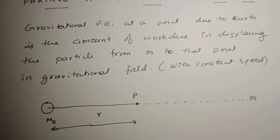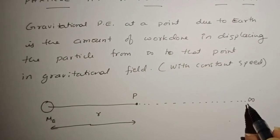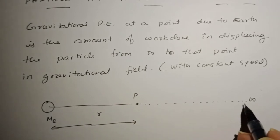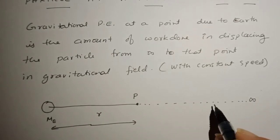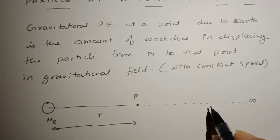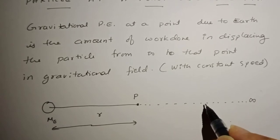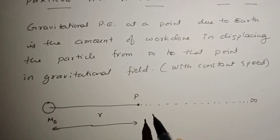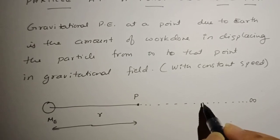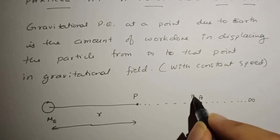As you can observe, if the particle is at infinity the gravitational force between that particle and the earth is zero. When you bring the particle closer and closer to the earth, the gravitational force increases — that means there is a variable force. Whenever there is a variable force, work done is the definite integral of force over displacement, so I should use integration. I will consider two intermediate points, point A and point B.